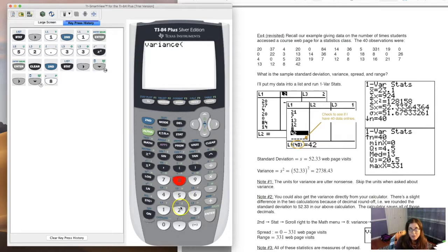So here's where I could find my variance. If I hit second stat, go to the math drop-down menu, hit option eight, I can find the variance in L1. And there we go, 2738.81. There's a slight round-off error. You see I had 43 when I did it from my calculation screen. I had 81 as the decimal when I did the actual variance function. This is more accurate.